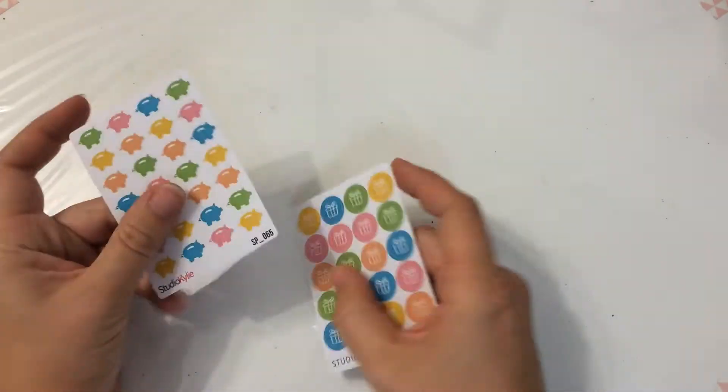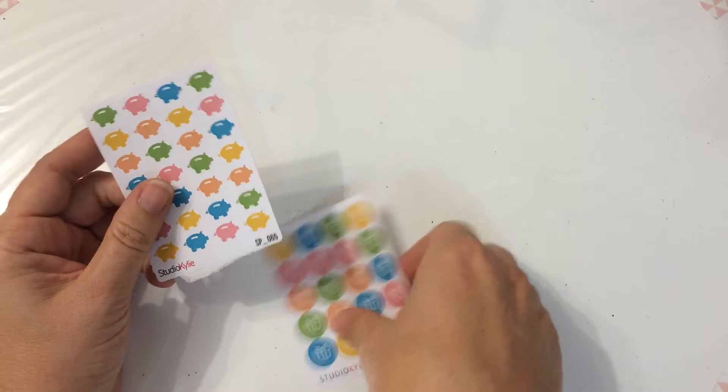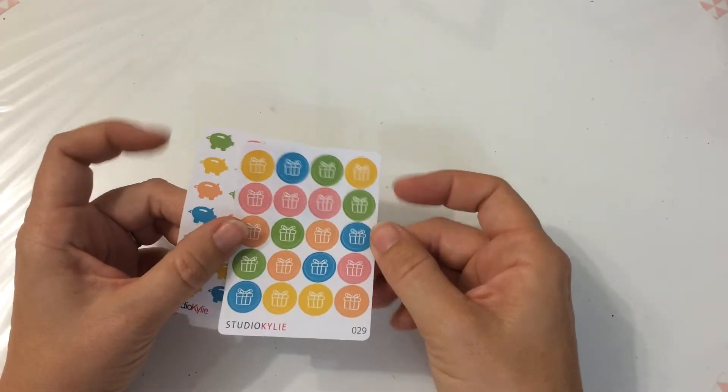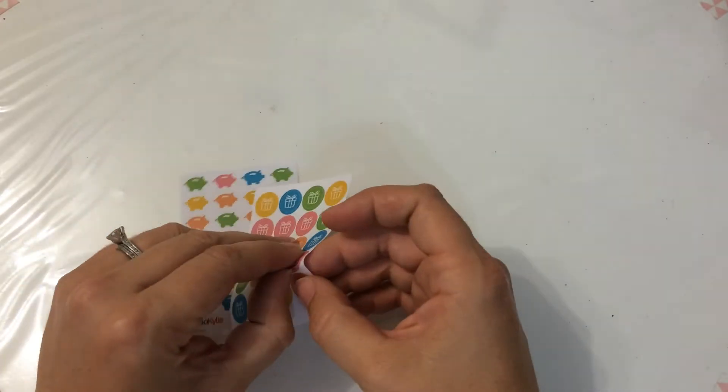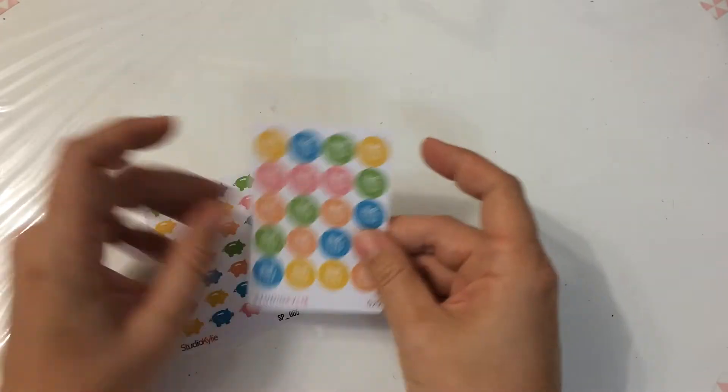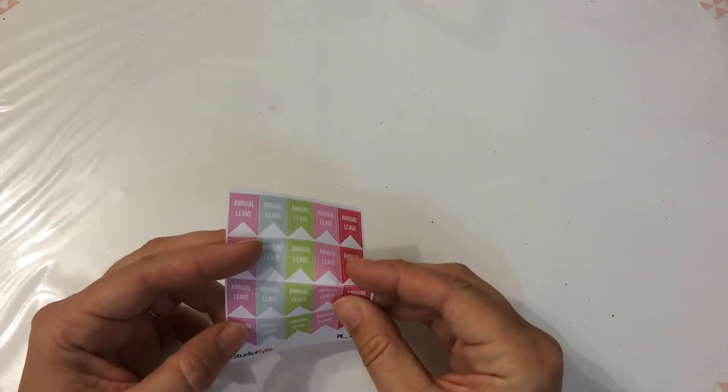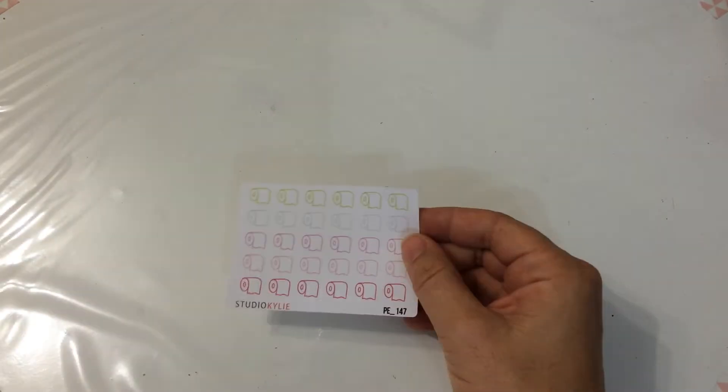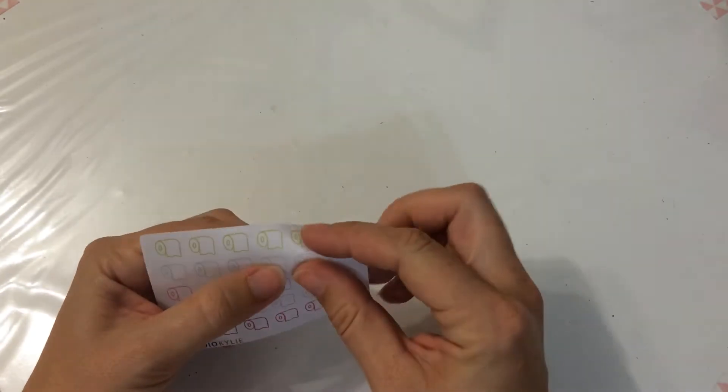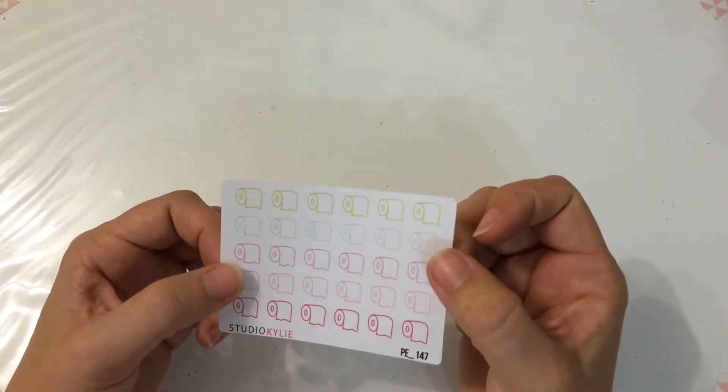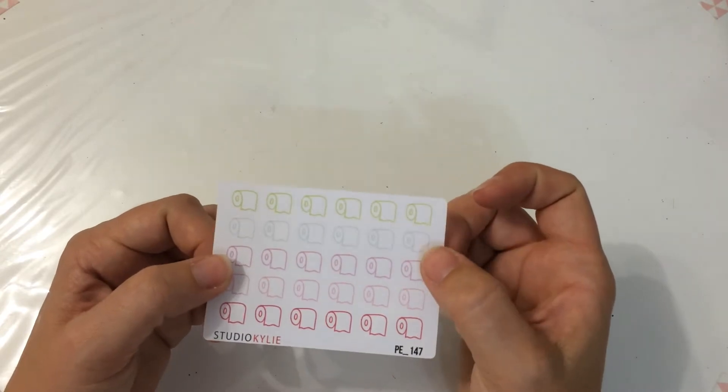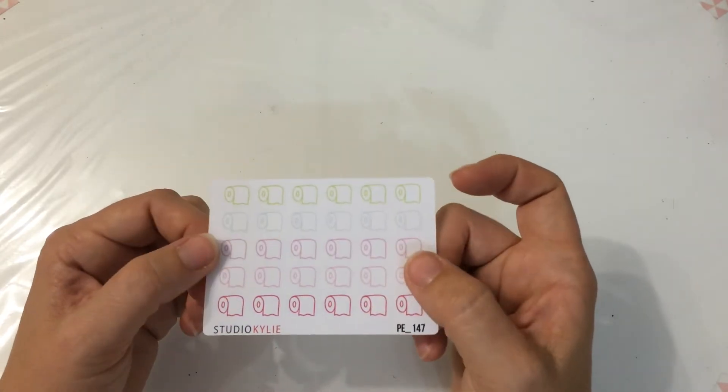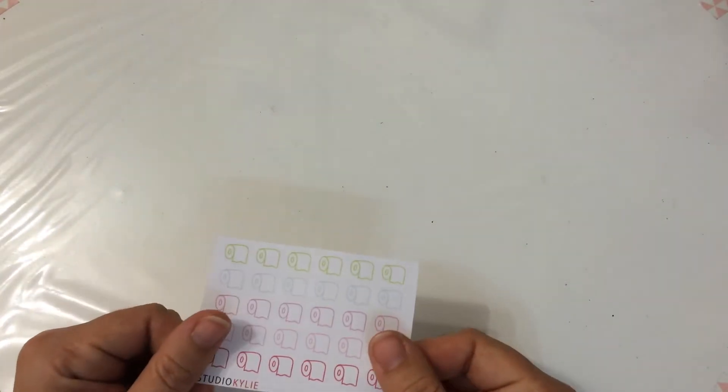More money boxes and birthday boxes. These I thought were really funny. Toilet roll holders, like toilet roll. I am never going to mark in my planner that I'm changing a toilet roll. Maybe when my youngest starts toilet training. If you've got any ideas, let me know what I could use these for.